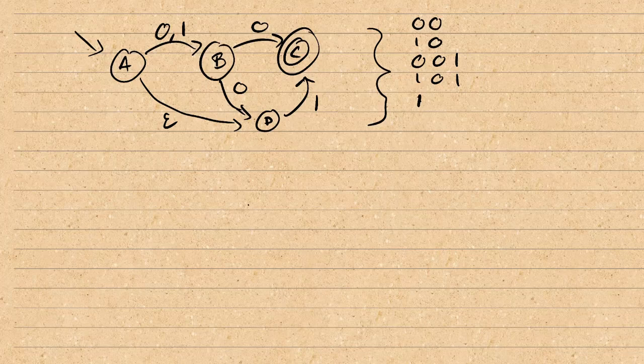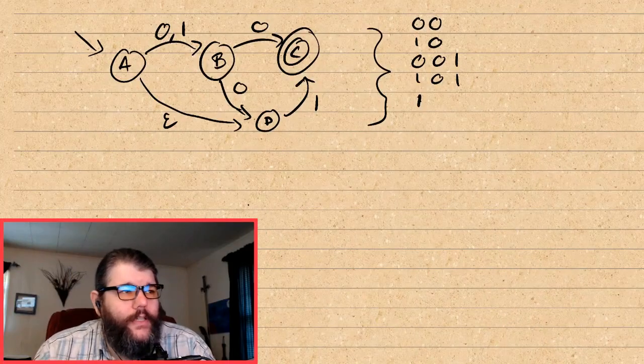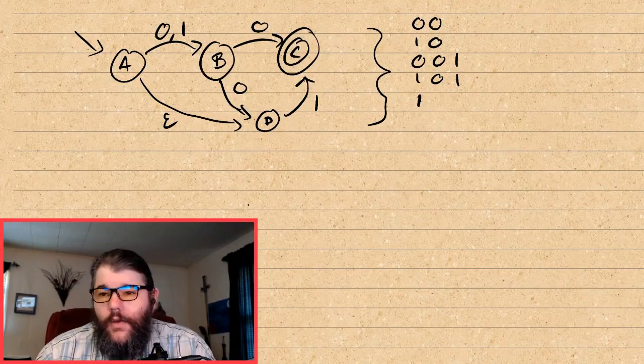Another thing that's special about state B is that there is no transition away on the 1. If the input alphabet is both 0 and 1, then B, in order to be deterministic, would have to tell us where to go on a 1. In this case it doesn't, so we fall off the machine at B. Falling off at B is kind of like there's a transition from B to the null trap state on a 1. The last new thing NFAs add is the empty string transition from A to D — any time we're in state A, we can immediately go to state D for free.